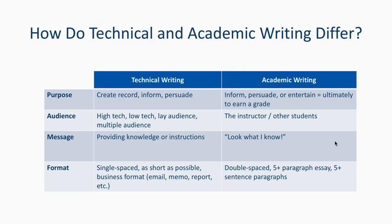The most noticeable visual difference between the two would be format. Technical writing is single-spaced, as short and concise as possible, with fully left-justified paragraphs and extra line spaces between paragraphs rather than tabs. Academic writing is double-spaced, with indented first lines and no extra line spaces between paragraphs.